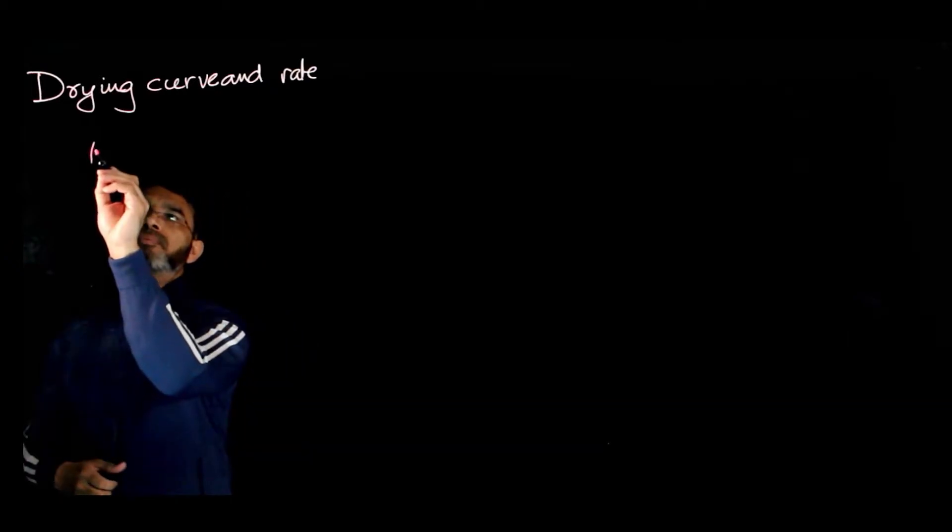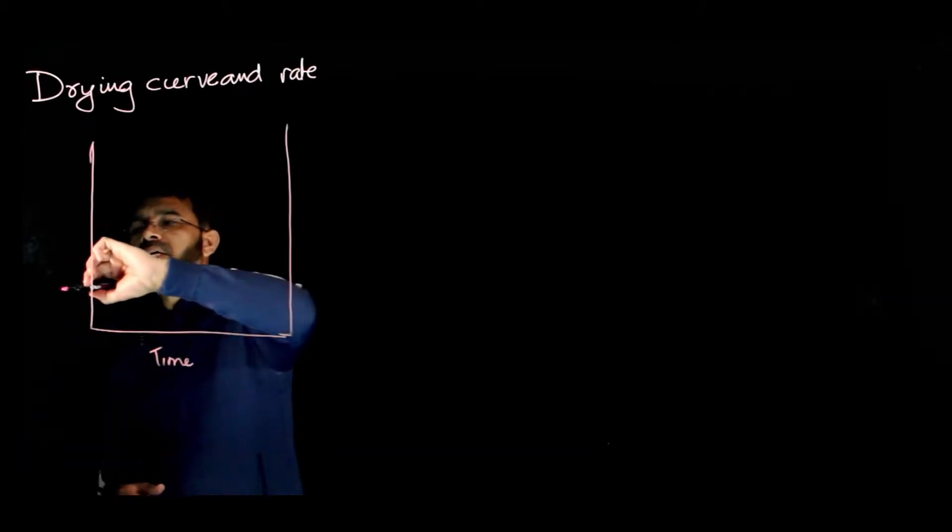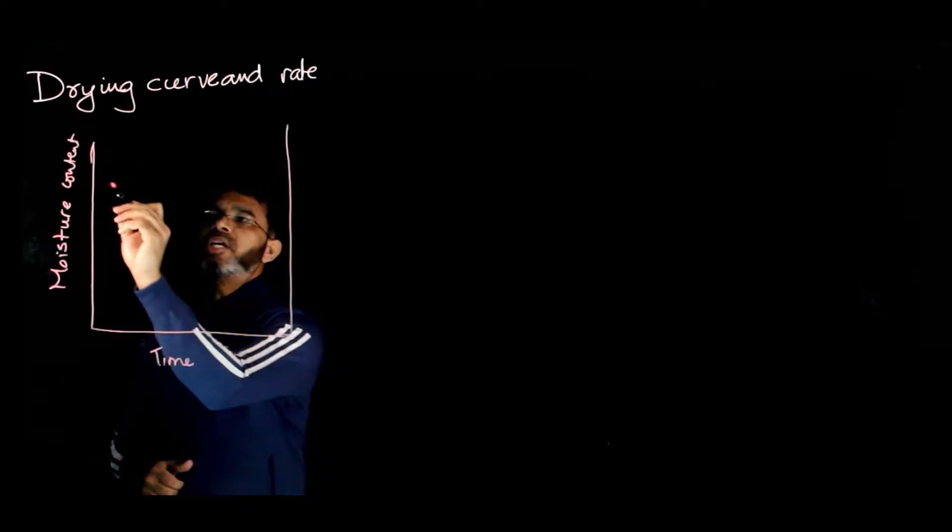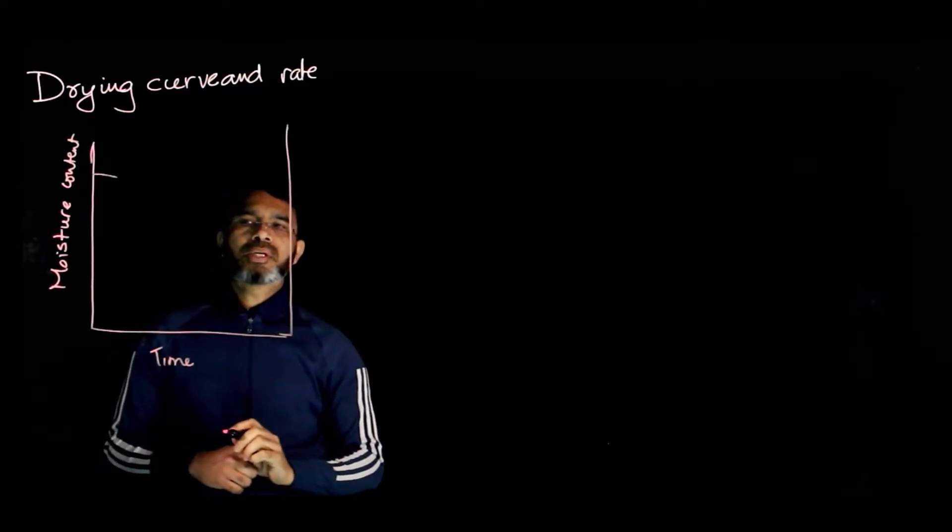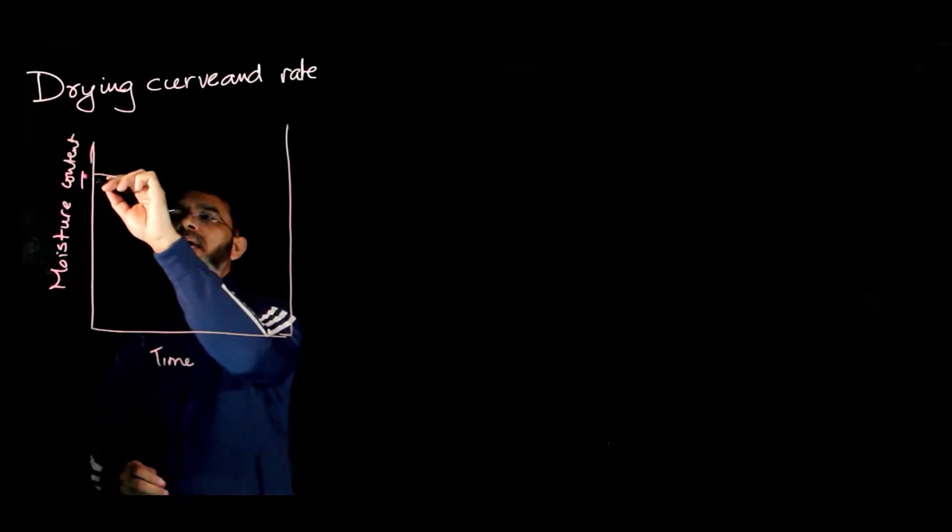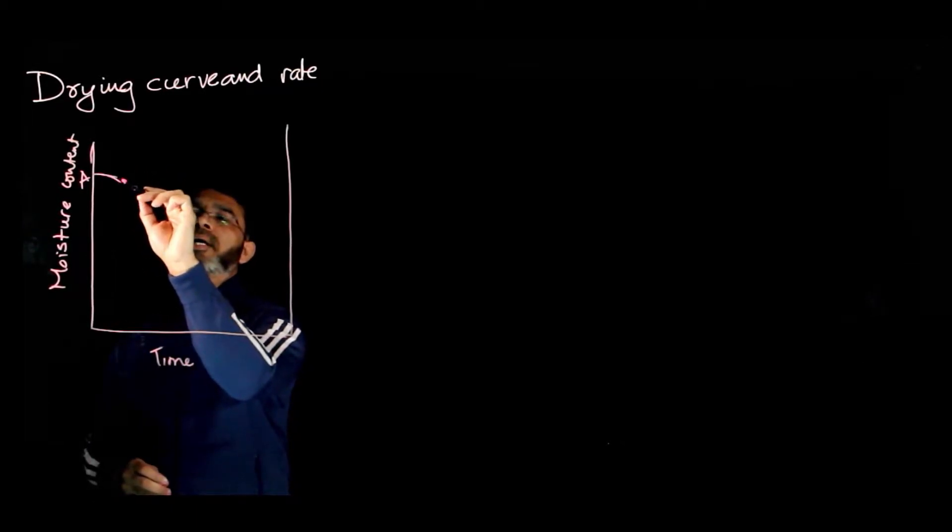In this session we talk about the drying curve. If you draw the moisture content versus time, initially the moisture content reduces slowly. This is point A. Up to a certain point, the moisture content will reduce slowly.